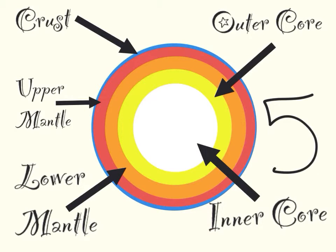There are five different layers to the Earth: the crust, the upper mantle, the lower mantle, the outer core, and the inner core.